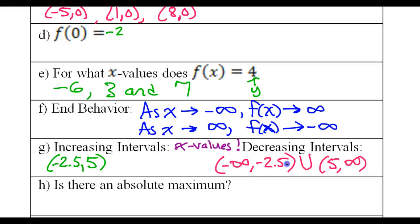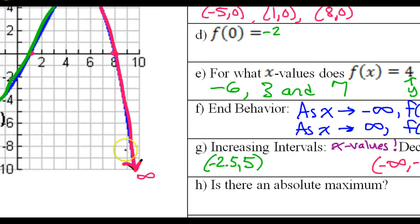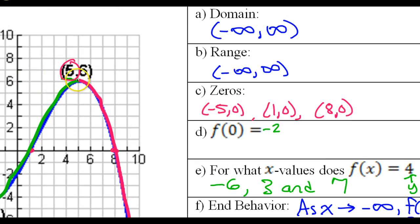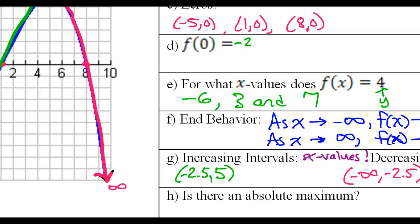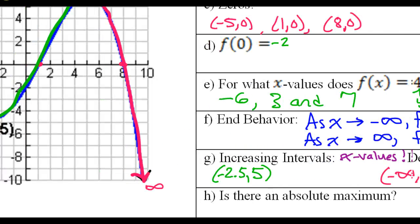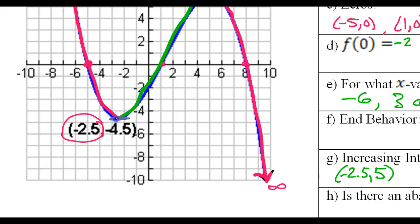We use round parentheses at 5 and negative 2.5 because right at the top of a hill it's neither increasing nor decreasing — it's flat for just a moment. So we don't include those points. Same at the bottom: at negative 2.5, the function is neither decreasing nor increasing.